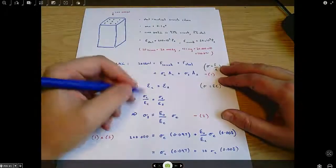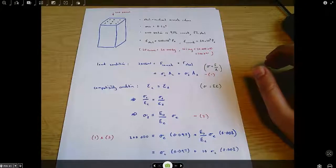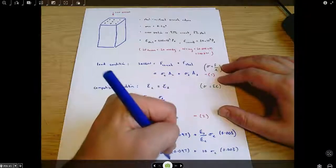So this is sigma C times 0.097 plus 10 sigma C times 0.003. And finally, that equals, just rearranging, 0.097 plus 10 times 0.003, which is 0.127 sigma C.